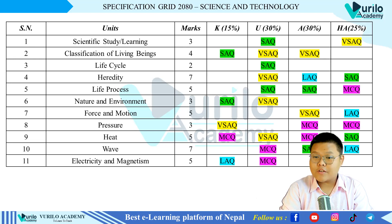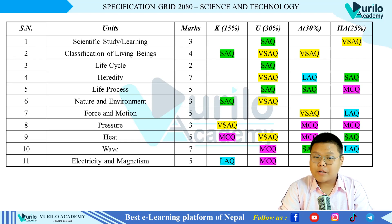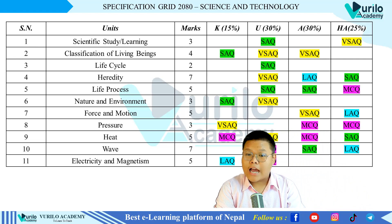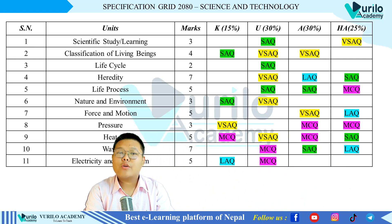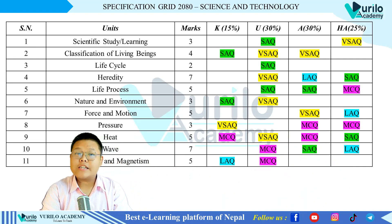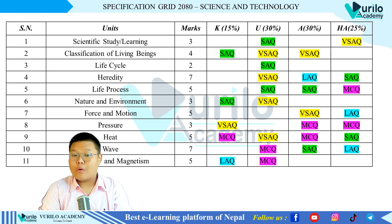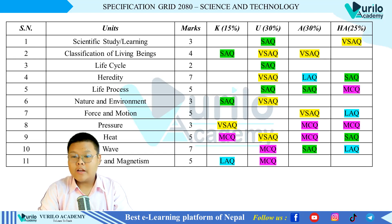For the Pressure chapter, there are 3-mark questions along with an application-based or higher ability MCQ. The Heat chapter is very important — it carries 7 marks total. For the Wave chapter, there is one long answer question at higher ability level plus an application-based short answer question. For Electricity and Magnetism, there is a 5-mark knowledge-based long answer question.